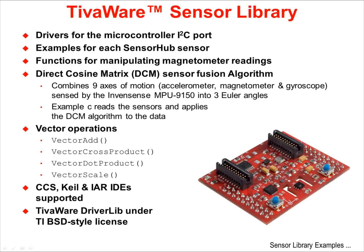The TivaWare sensor library includes drivers for the microcontroller I2C port, examples for each SensorHub sensor, and functions for manipulating the magnetometer readings. A direct cosine matrix or DCM sensor fusion algorithm is included that combines the nine axes of motion from the motion sensor into three Euler angles of position. Example code reads the sensors and applies the DCM algorithm to the data. Also included are vector operations like add, cross product, dot product, and scale.